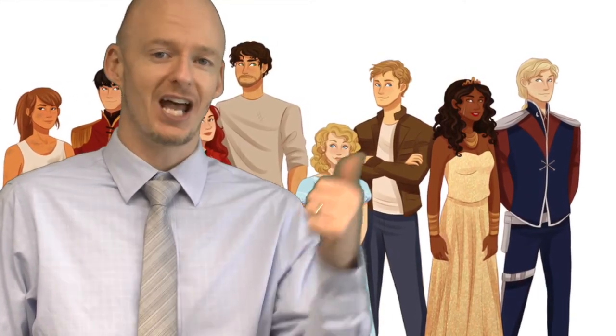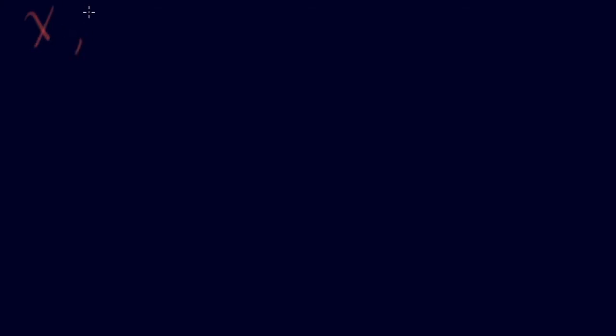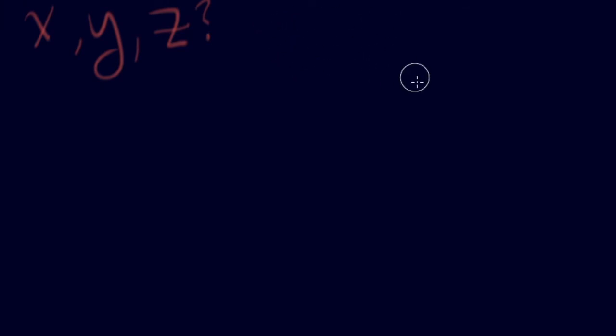Now we're going to look at solving systems of equations with three variables: X, Y, and Z. It's a pretty complicated topic. We're going to look at situations with linear solutions. You'll dive more deeply into this in high school. I'm going to give you a strategy that works well. Make sure you're very organized and have a lot of paper.